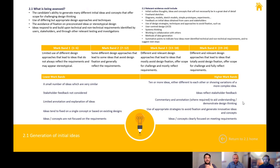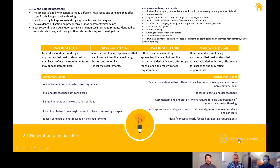Looking at the mark bands — we've got mark band one to four, and as a high-achieving school we're only really concerned with mark band four. It says: different and relevant design approaches that lead to ideas that totally avoid design fixation, offer scope for challenge, and fully reflect requirements. That last point — fully reflect requirements — means everything we've done so far needs to feed into 2.1. The design brief, the user needs, and primary user needs all need to be clearly responded to in your design ideas.